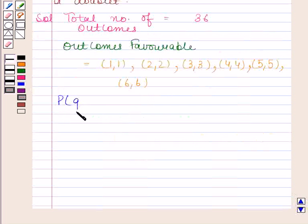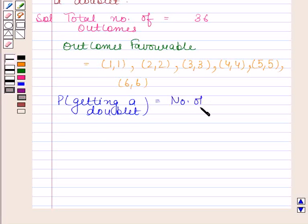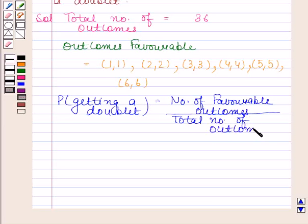Now probability of getting a doublet is equal to number of favorable outcomes divided by total number of outcomes. Now number of favorable outcomes are 6 and total number of outcomes is 36.